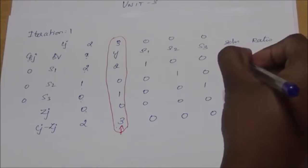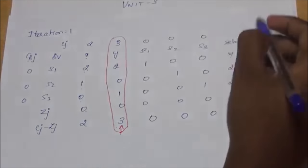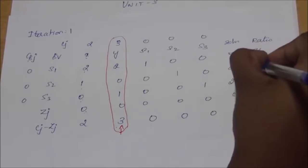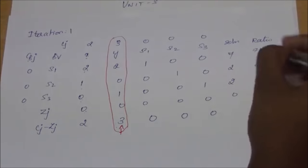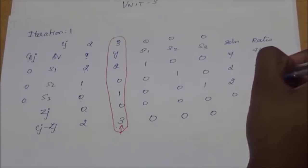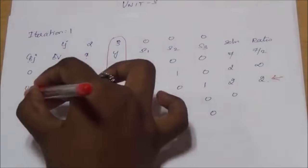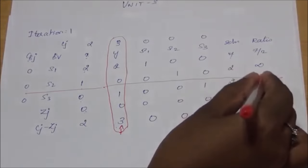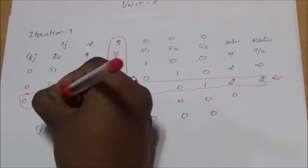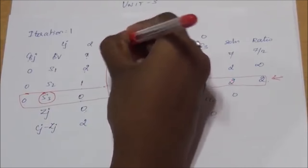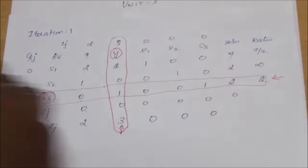For finding the ratio, we divide the solution column values by the pivot column values: 7/2, 2/0 = infinity, 2/1 = 2. We take the least value, which is 2, so this is the corresponding pivot row. Therefore, s3 is the leaving variable and y is the entering variable. We continue with iteration 2.